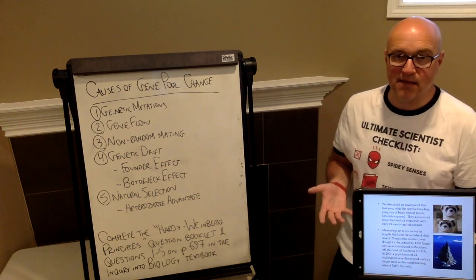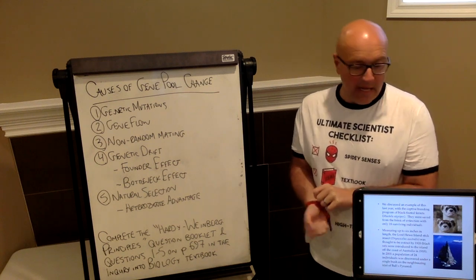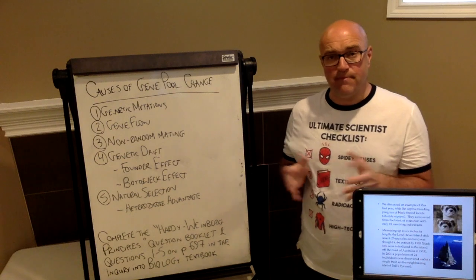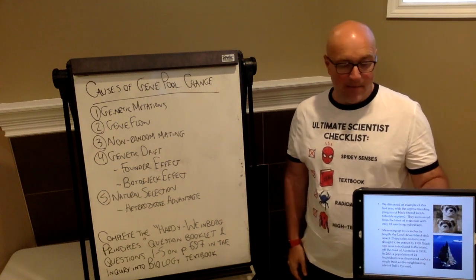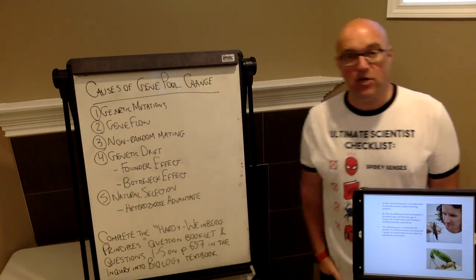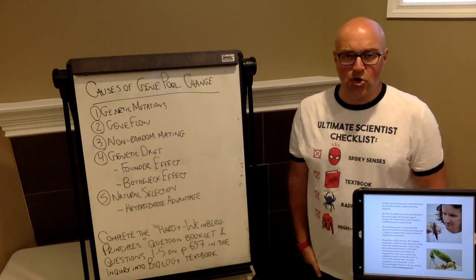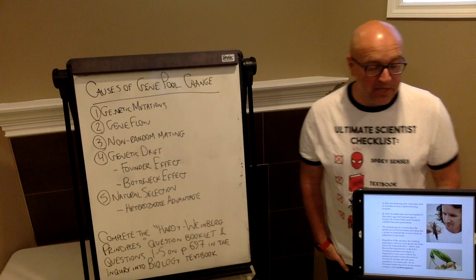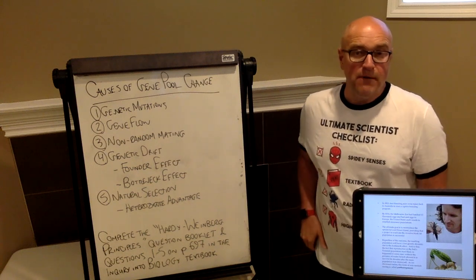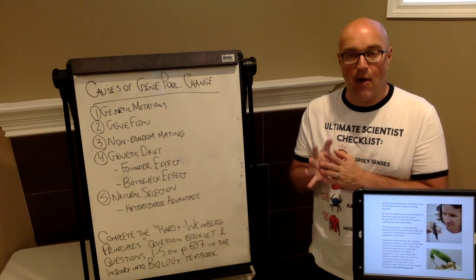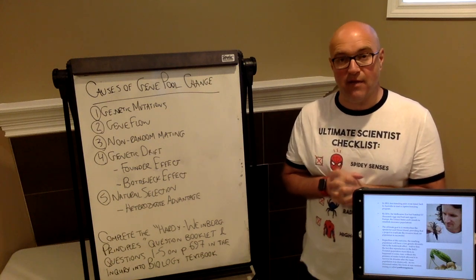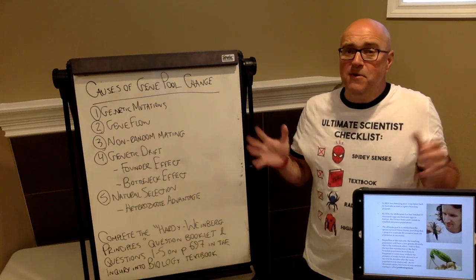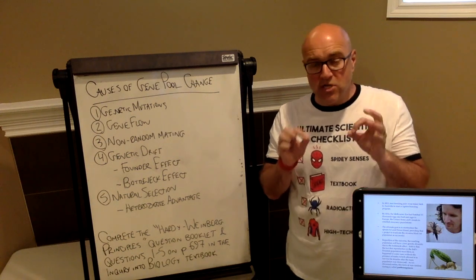Another example of this would be the Lord Howe Island stick insect, the largest insect in the world. It was thought to be extinct in 1920. They discovered it on another island off the coast of Lord Howe Island, which is off the coast of Australia. They found a population of only 24 of them in 2001. They brought them into a captive breeding program at a zoo. By 2016, the Melbourne Zoo alone had already hatched 13,000 eggs, and they set up breeding programs all around the world.